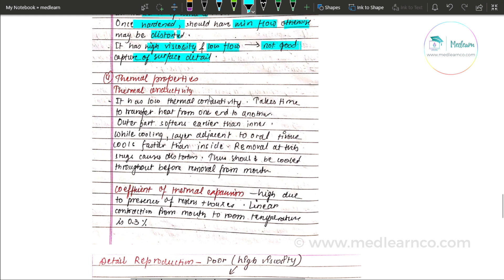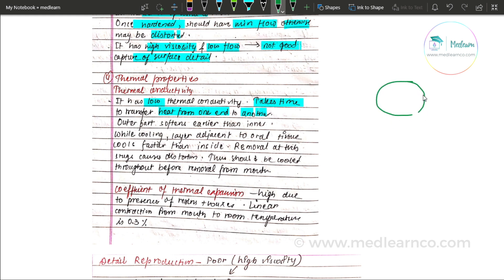Thermal properties: thermal conductivity of impression compound is low. This means it takes time to transfer heat from one end to another. So the outer part softens earlier than the inner part. When being softened in water, the outer surface may appear soft while the inner portion is still hard — this demonstrates its low thermal conductivity.